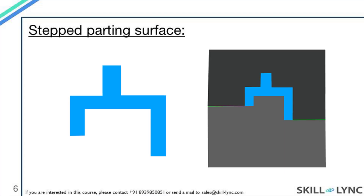Here we have a model similar to the previous one, but in this case the base of the model is not in the same plane. So we can't have a flat parting surface in this case. On the right, you can see what the core and the cavity will look like for this model. The green line again indicates the parting surface for the model. You will notice that though the parting surface is still flat, but it is located in two separate planes. So this type of parting surface is called the stepped parting surface.